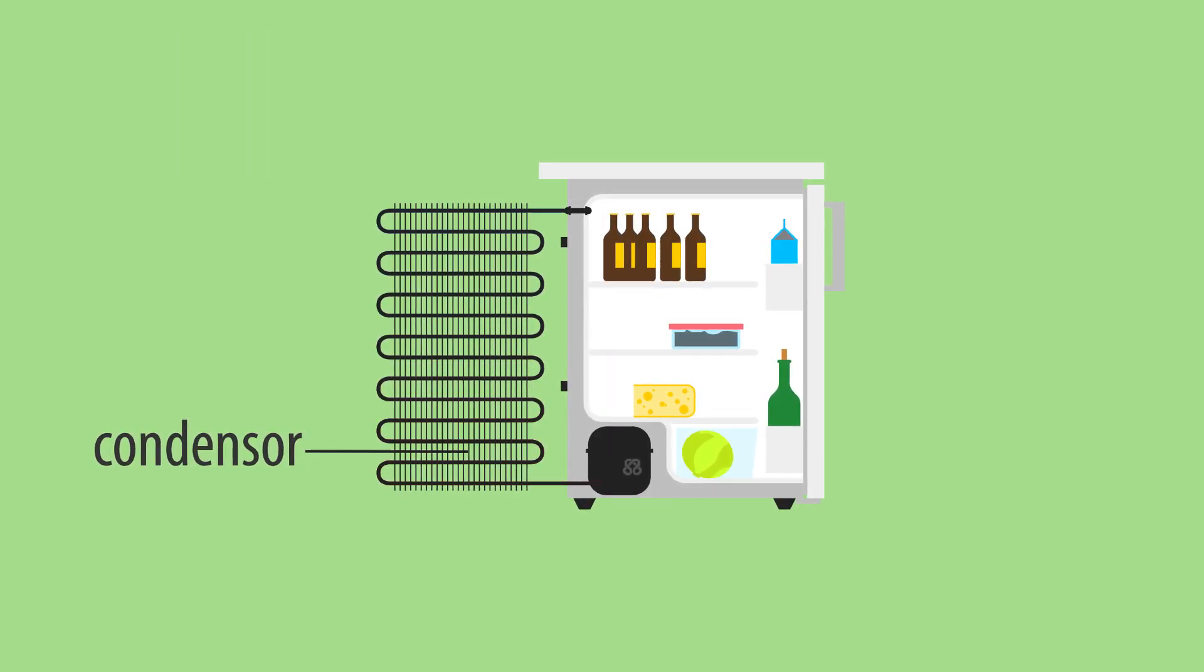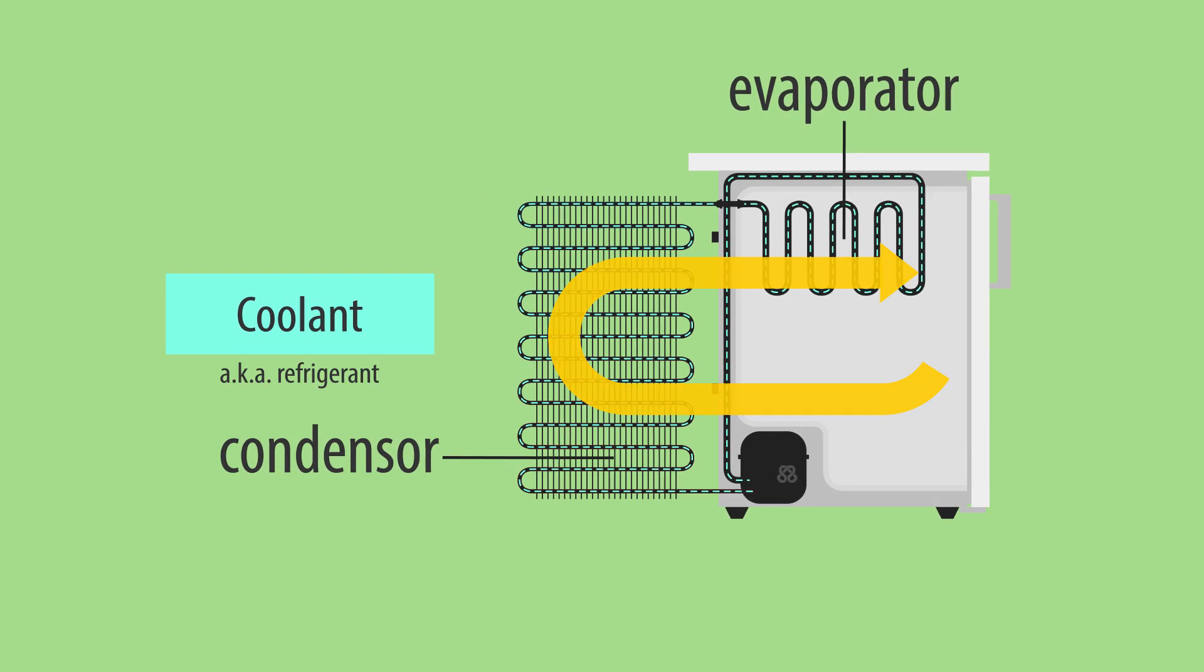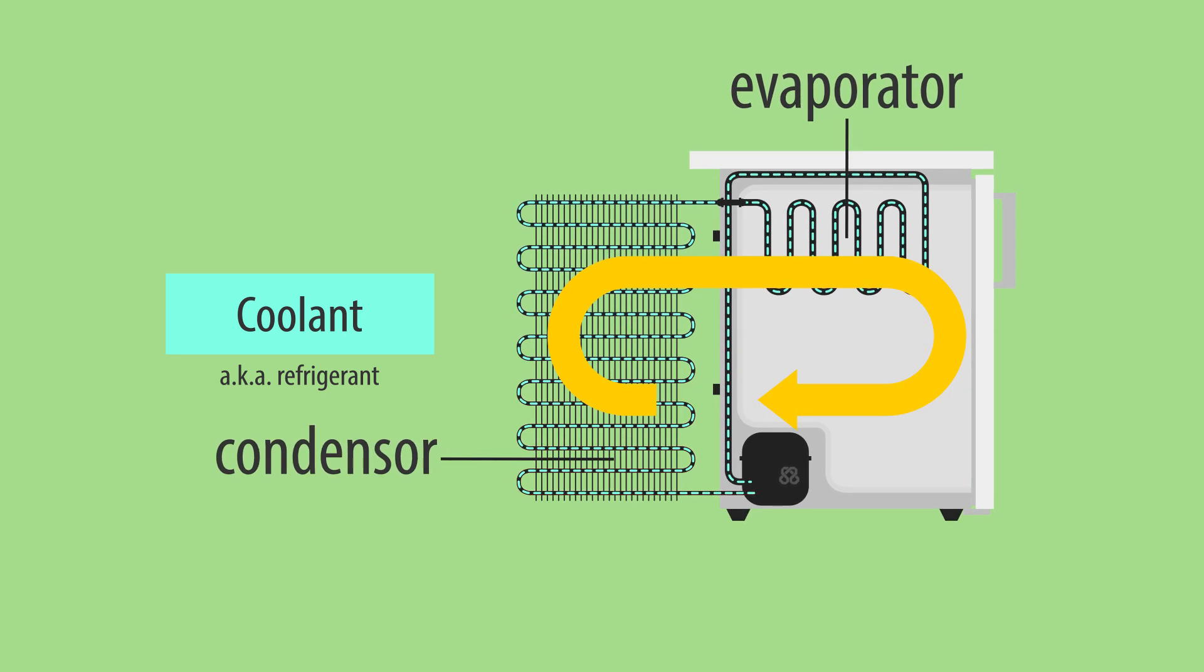Inside the fridge, connected to the condenser, is the evaporator. A gas called a coolant is circulated from the evaporator to the condenser and back again.